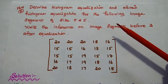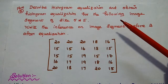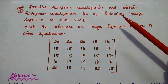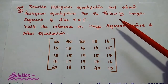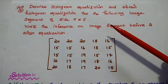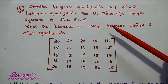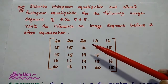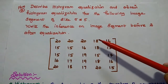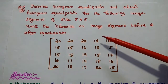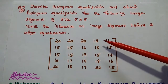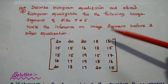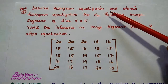Dear students, now we are going to solve one problem in histogram equalization. The problem asks us to describe histogram equalization and obtain the histogram equalization for a given image segment of size 5x5, and write the inference on the image segment before and after equalization.